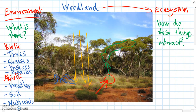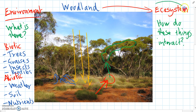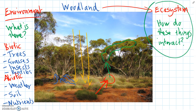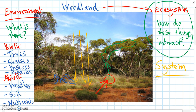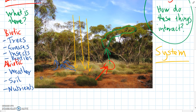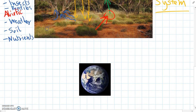So we can see there are lots of different interactions that happen in an environment, which makes it into one big system, which we call an ecosystem. The final thing to remember is that an ecosystem — all these things interacting together — we call a system.